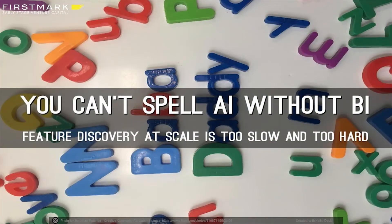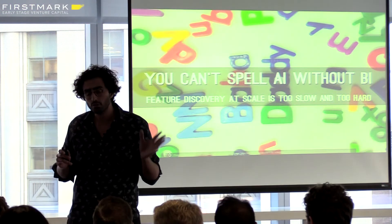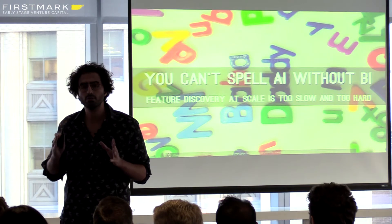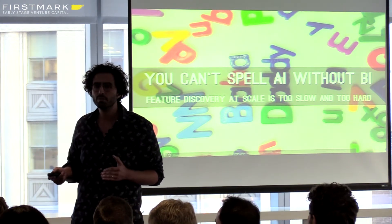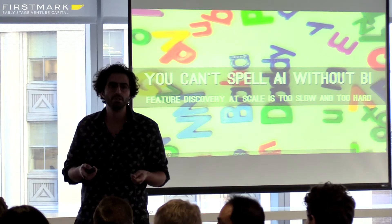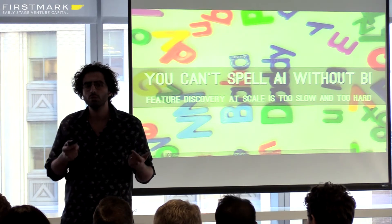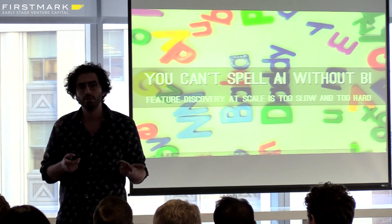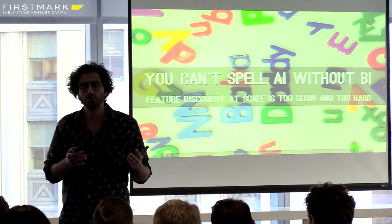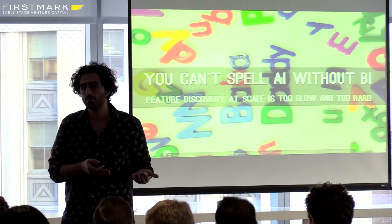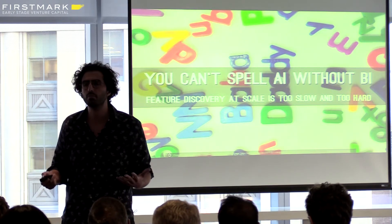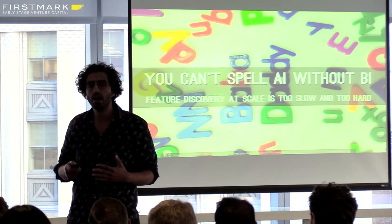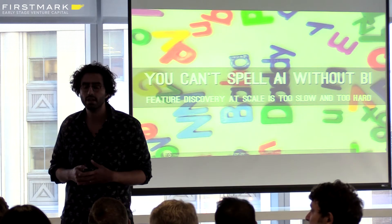The next big challenge we saw was a skills mismatch, which is actually driven by the collaboration problem but shows up concretely in a number of cases. The first place you see it is in feature generation: you need to train your model against features derived from data, but to get to those features you're usually writing really complex data processing jobs, and that's not what a lot of data science teams are good at.